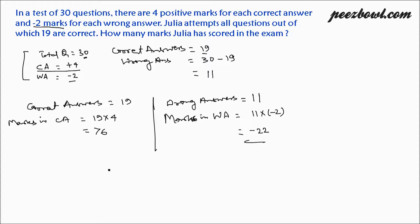Now we need to find out what is the total score she has got. So total marks is equal to marks in correct answer plus marks in wrong answer. This is equal to 76 plus minus 22. 76 plus minus 22 is 54.